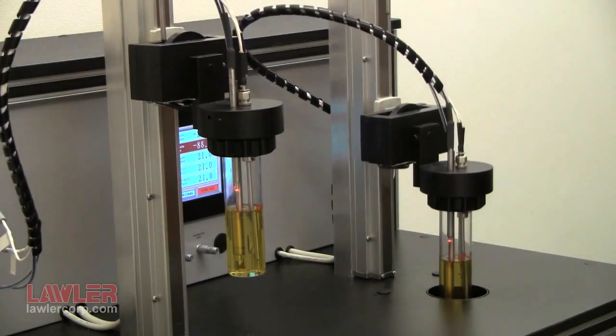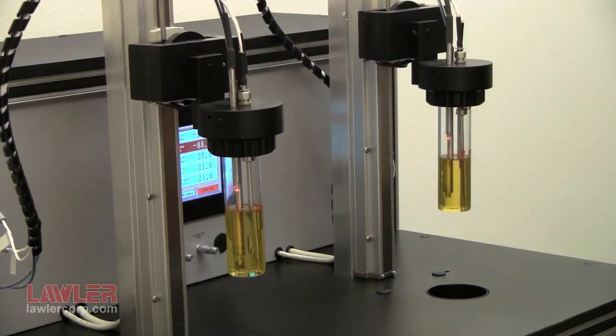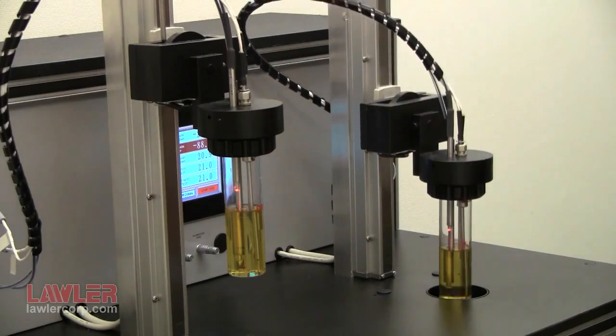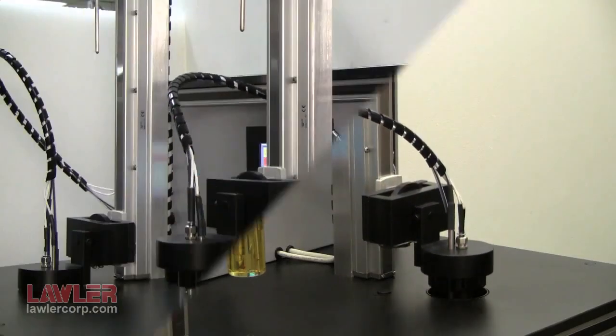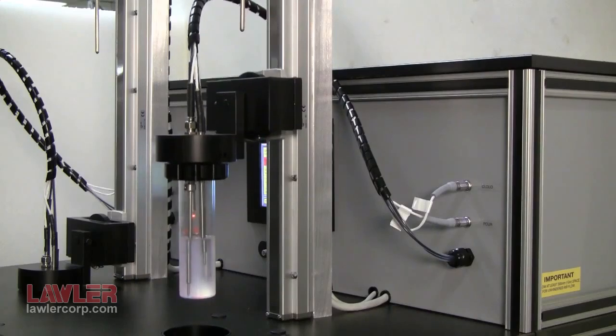It lifts and tilts the sample until movement is detected, up to a maximum of 90 degrees. A pour is detected, so the arm returns the sample for further cooling and the process is repeated.